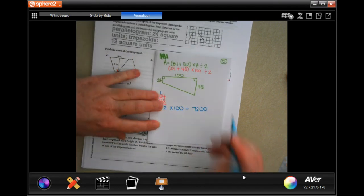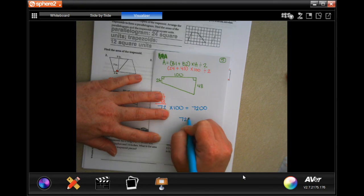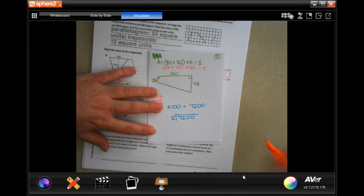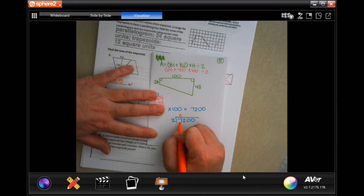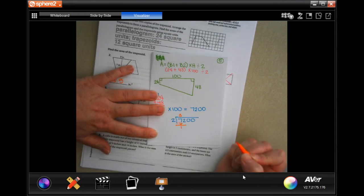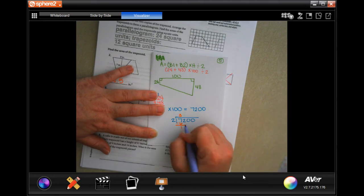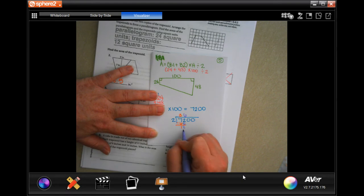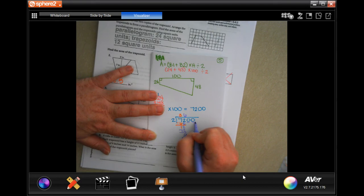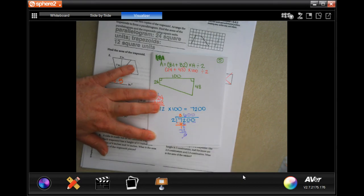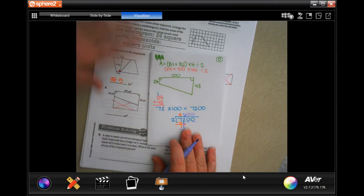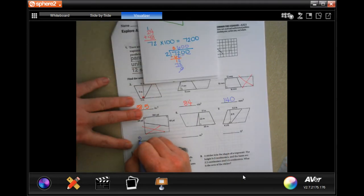So 24 plus 48, 4 plus 8 is 12, carry that 1. 1 plus 2 is 3, plus 4 is 7. So now we have 72. When we multiply that by 100, we get 7,200. My bad, two zeros, two zeros. So now we need to divide that by 2. 2 is going to go into 7 three times. 3 times 2 is 6. Subtract, get 1. 1 is smaller than 2, so I'm going to bring down my other 2. 2 goes into 12, 6 times. 6 times 2 is 12. Subtract, get 0. Now I end in a 0, and I have two zeros left. I'm going to put them up there. So 3,600. Not so bad, guys.